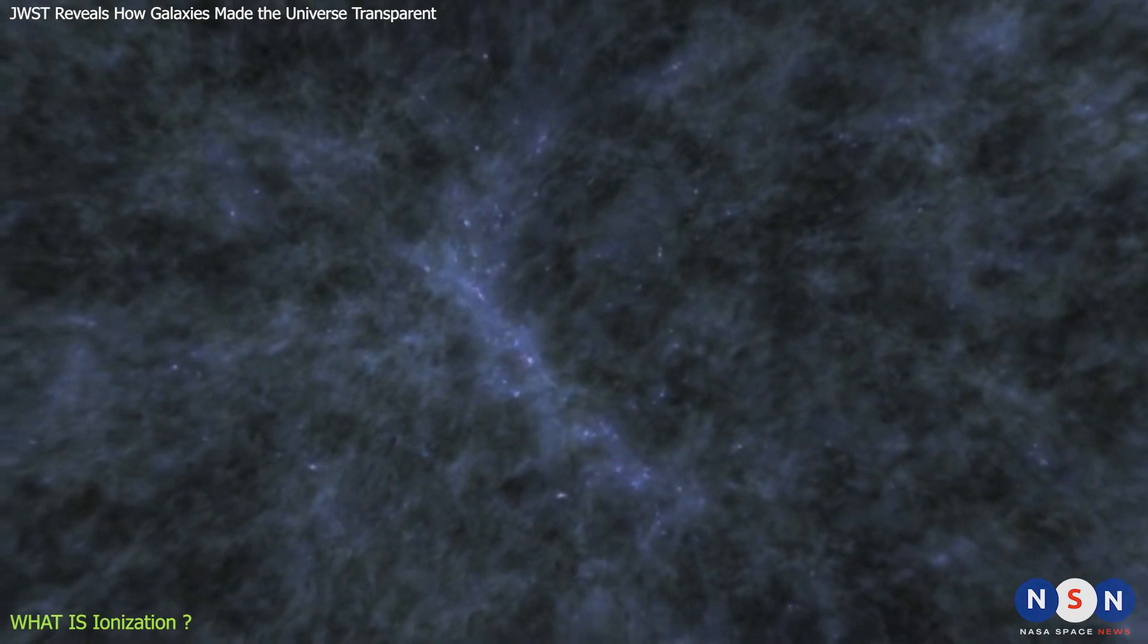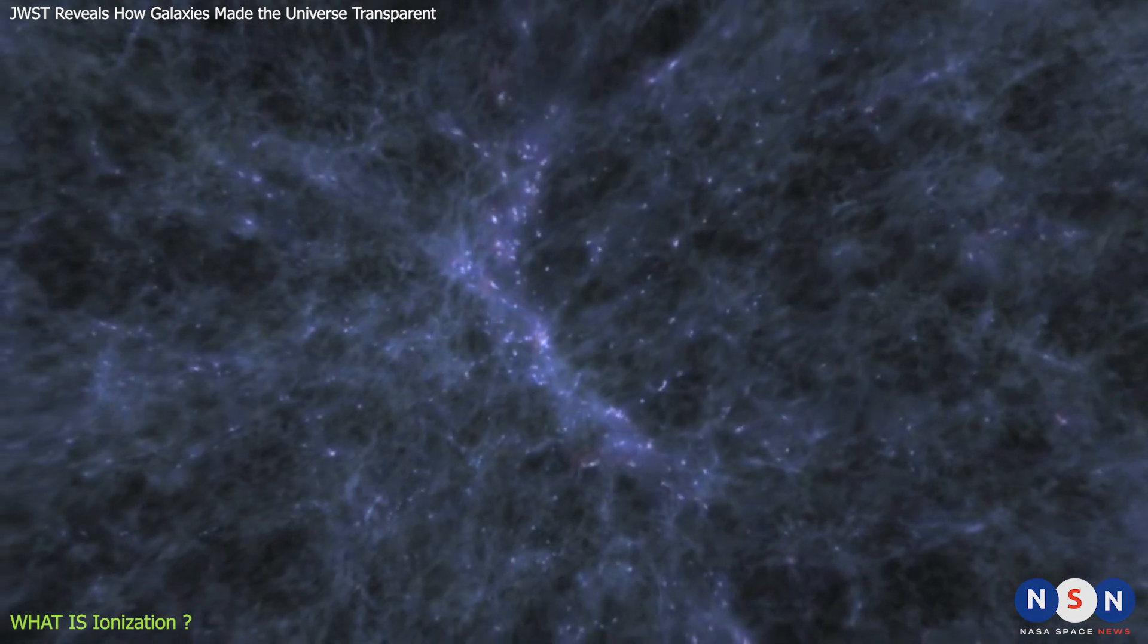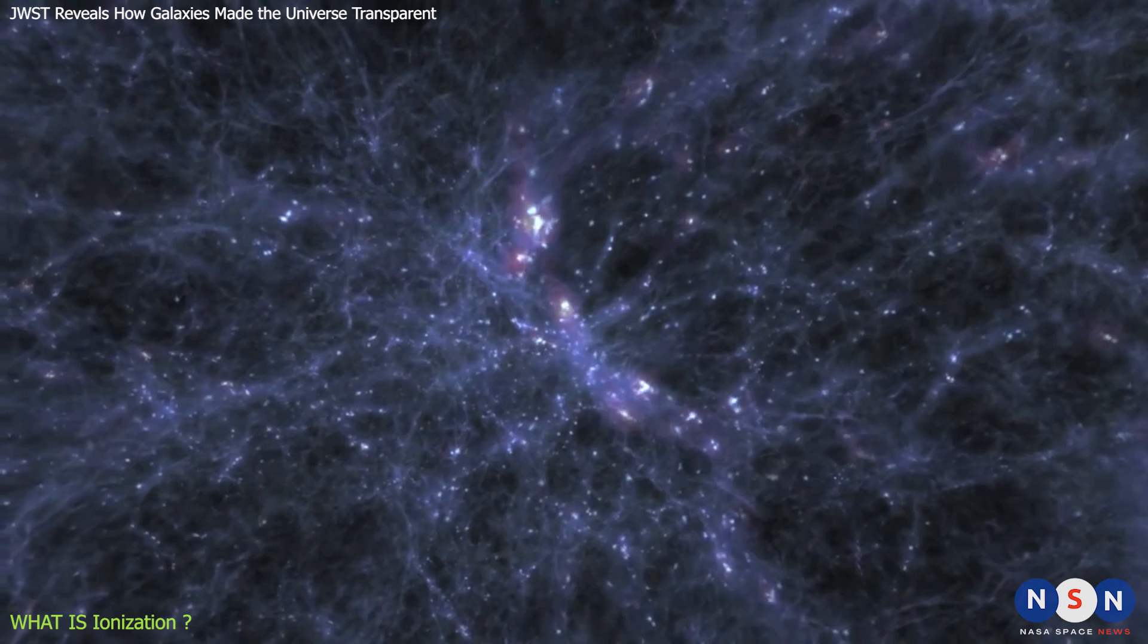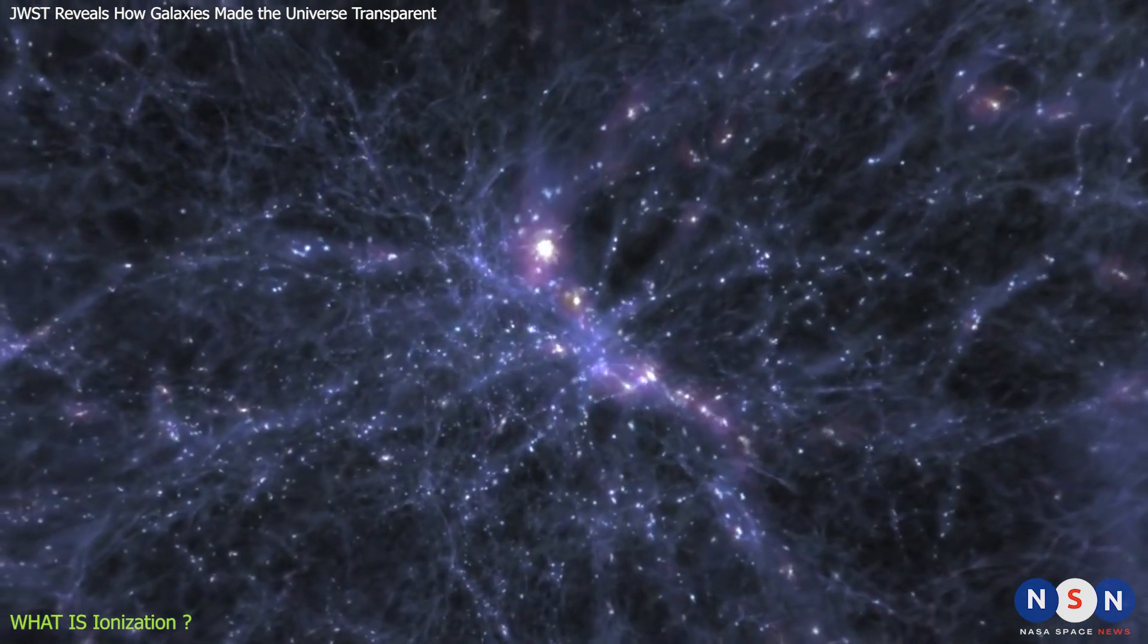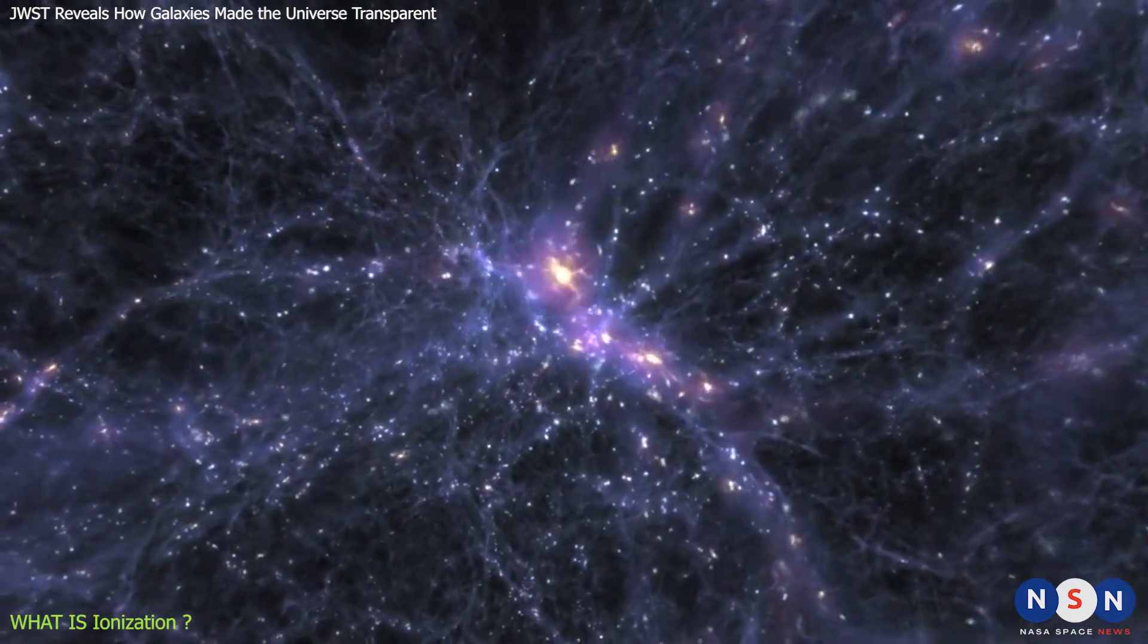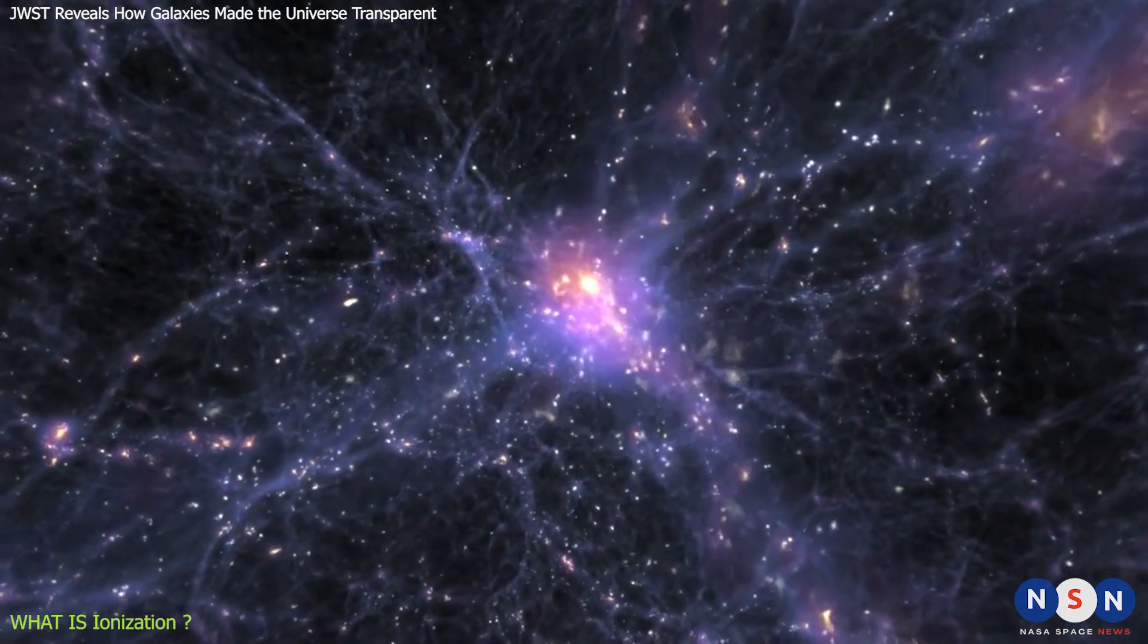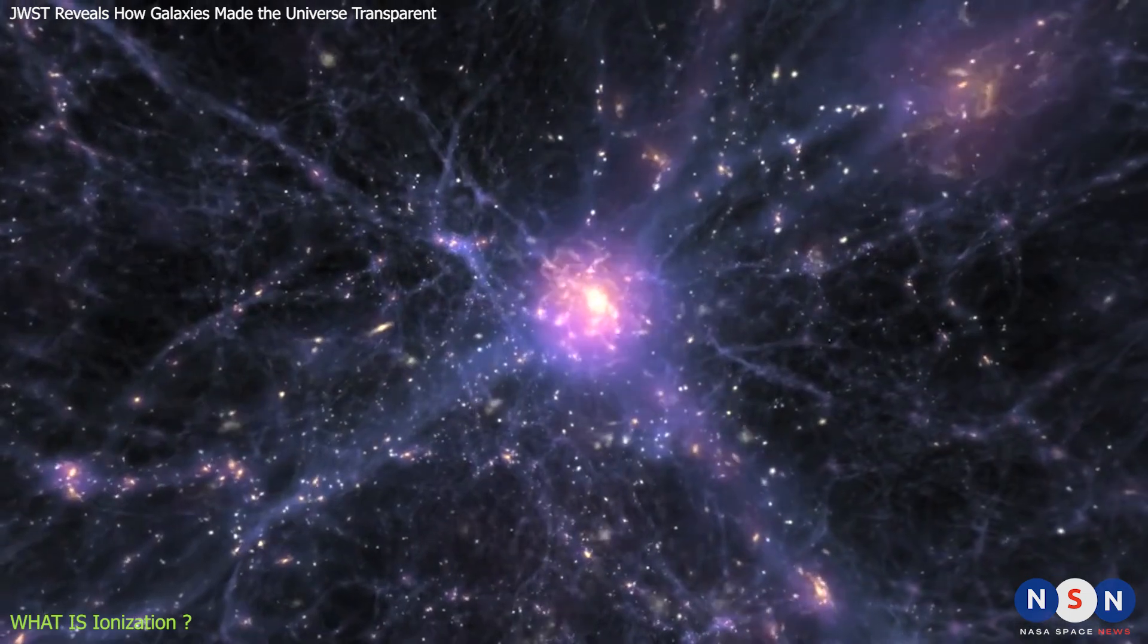One of the places where ionizing light plays a crucial role is in the intergalactic medium, or IGM. This is the name given to the gas that fills the space between galaxies. The intergalactic medium is mostly composed of hydrogen and helium atoms, which are the simplest and most abundant elements in the universe.